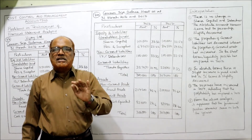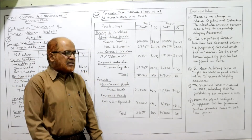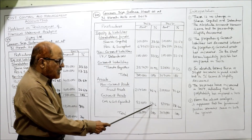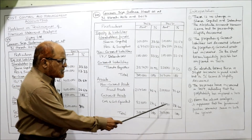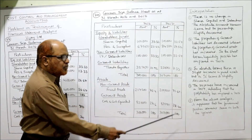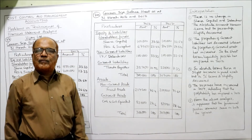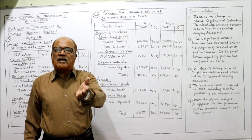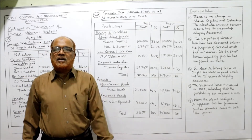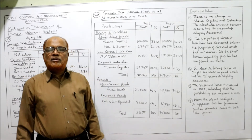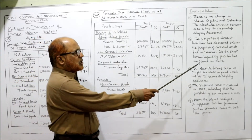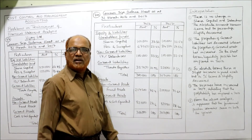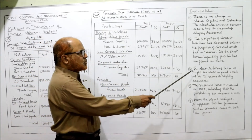Whereas the percentage of current assets has increased: 27.6% to 28.40%. Current liability has decreased and current assets has increased, so the short-term liquidity position has improved in 2017.